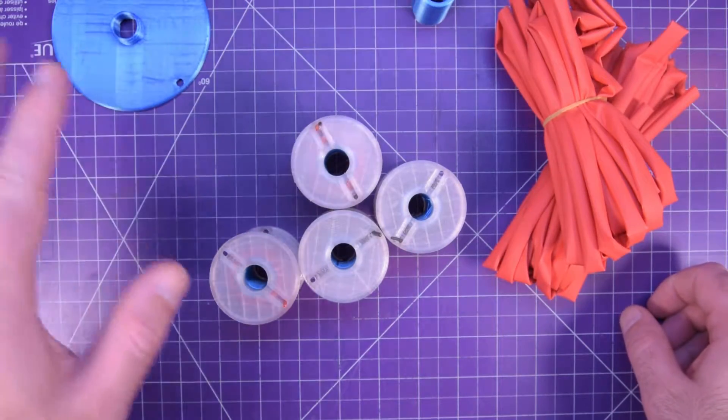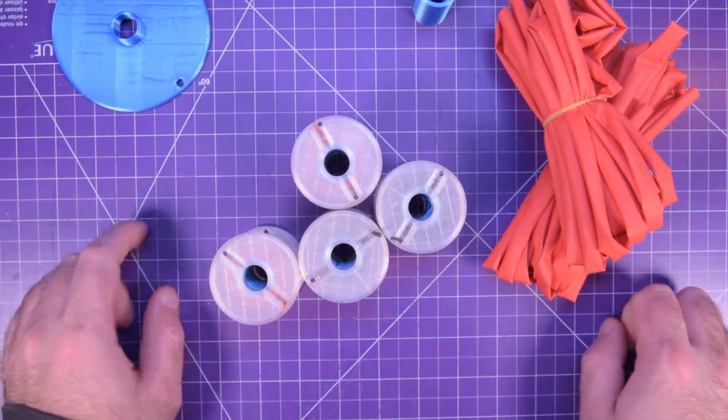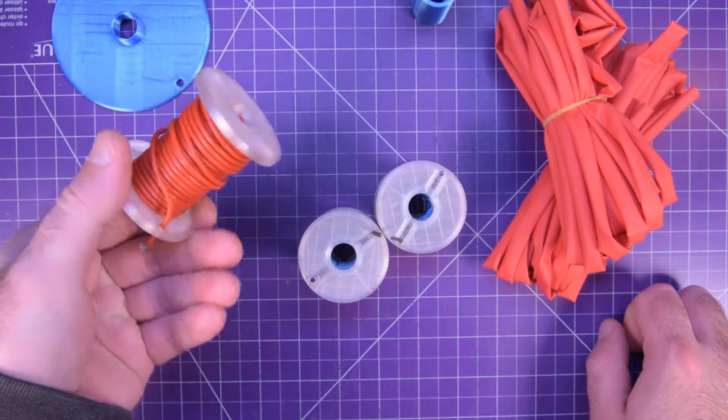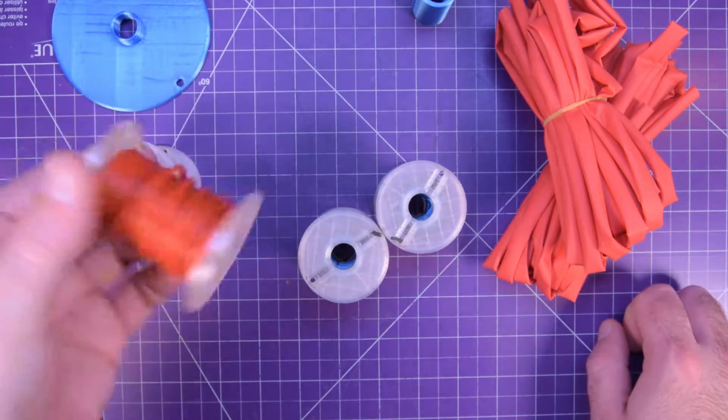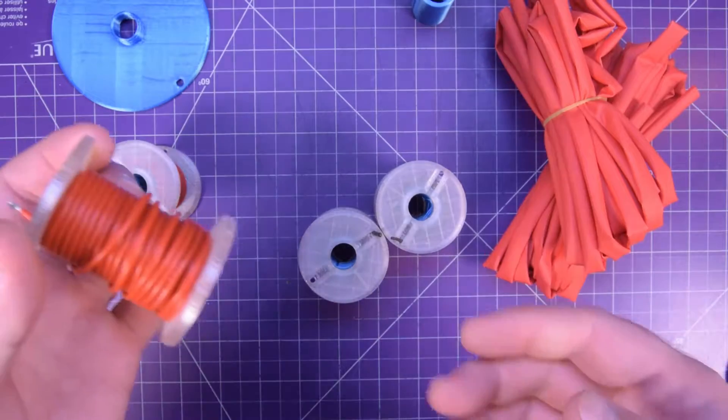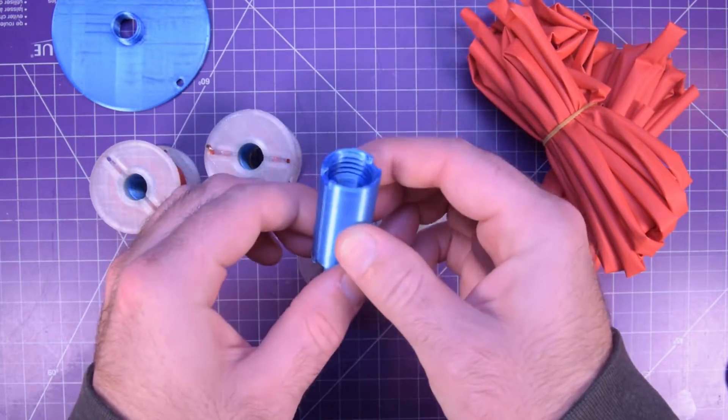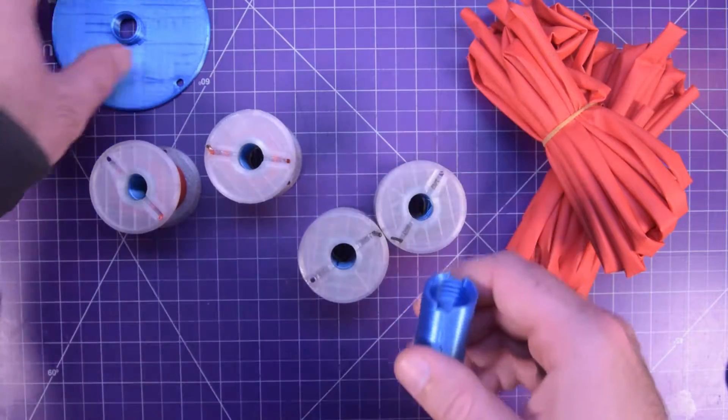But user Cabot Castle on Thingiverse has the solution. He made cable spools, like cable bobbins, with a standardized center portion, which prints standing up like that, with threads on the top.